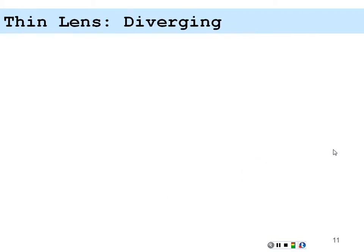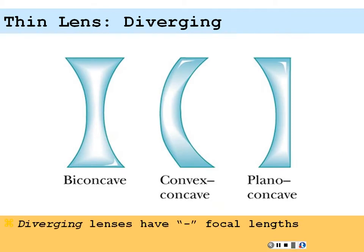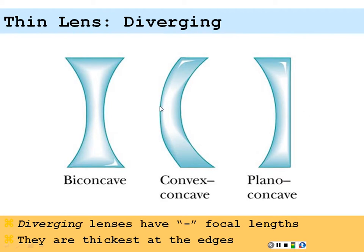As opposed to a diverging lens, which has a negative focal length — the image would not be located on the side of the outgoing rays, and they are thickest at the edges. So if the middle is thinner than the outer edges, it is a diverging lens. All three diverging types — biconcave, concavo-convex, and plano-concave — are thicker on the outside.